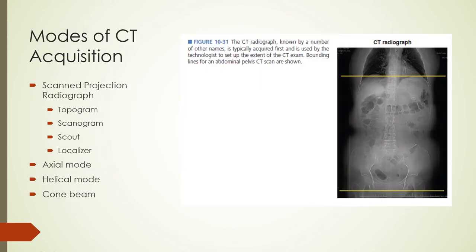The beginning of most CT acquisitions is a scanned radiograph — a radiograph of patient anatomy acquired with a fixed tube and detector orientation, no rotation, and the patient translated through the scanner bore. It is called by different names by different manufacturers. Once the radiograph is obtained, technologists can plan the scan by defining the extent of the scan, kV, mA for manual scans, field of view, pitch, and whether an axial or helical mode will be acquired.